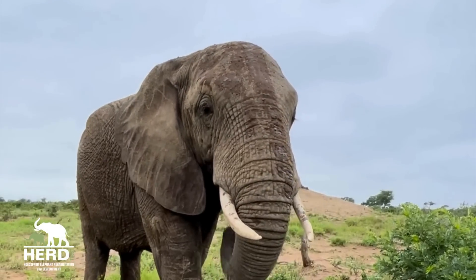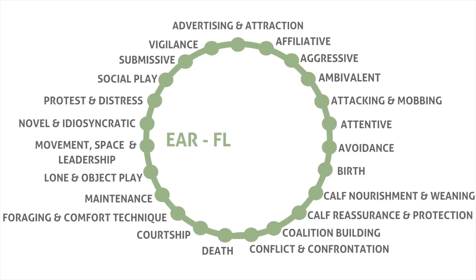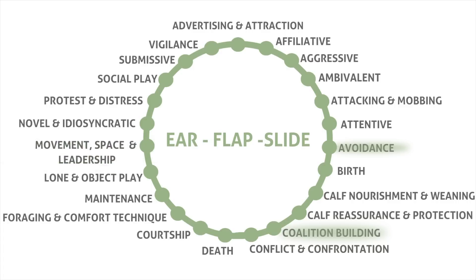The behaviour ear flap slide can be seen in three different types or contexts of behaviour, namely avoidance, coalition building, and finally, movement, space and leadership. In this episode, we take a closer look at the context: movement, space and leadership.